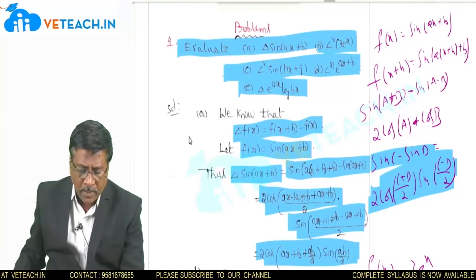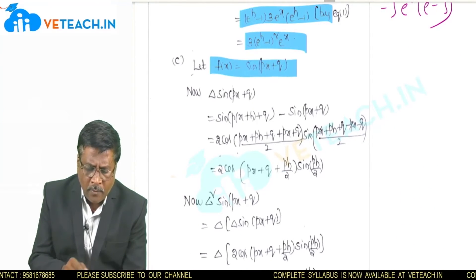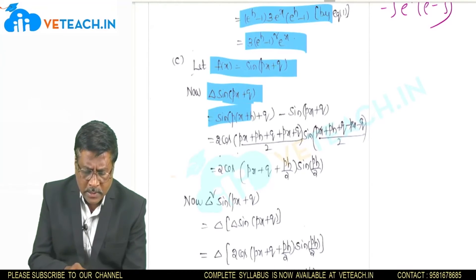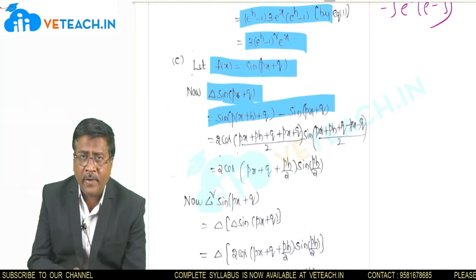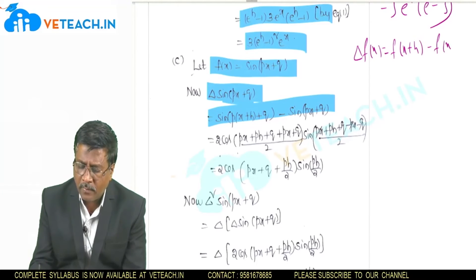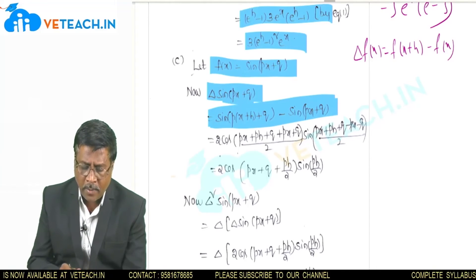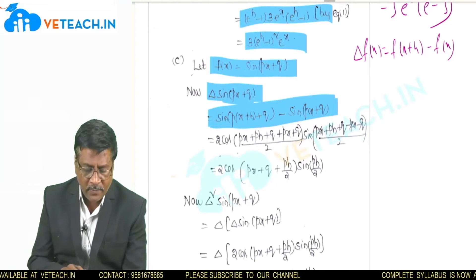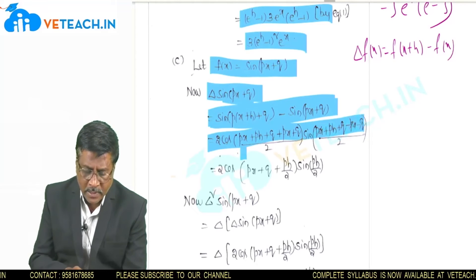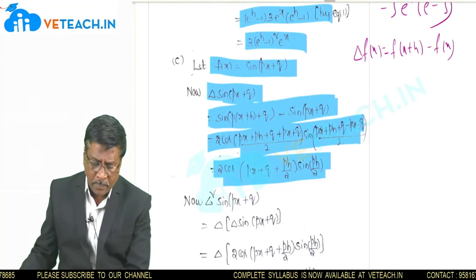The third problem is delta squared of sin(px+q). Let f(x) = sin(px+q). The first forward difference is delta of sin(px+q) = sin(p(x+h)+q) − sin(px+q). Applying the formula sin C − sin D = 2·cos((C+D)/2)·sin((C−D)/2), we get 2·cos(px + q + ph/2)·sin(ph/2).